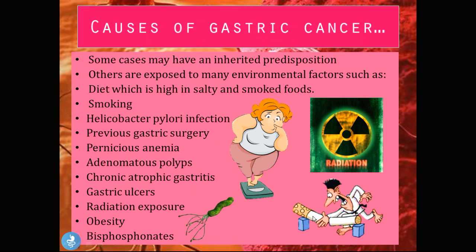Some cases may have an inherited predisposition — a cancer-promoting proto-oncogene passed on familiarly by parents and grandparents. Others are exposed to environmental factors such as a diet high in salty and smoked foods, smoking, Helicobacter pylori infection, previous gastric surgery, pernicious anemia, adenomatous polyps, chronic atrophic gastritis, gastric ulcers, radiation exposure, obesity, and ingestion of bisphosphonates.